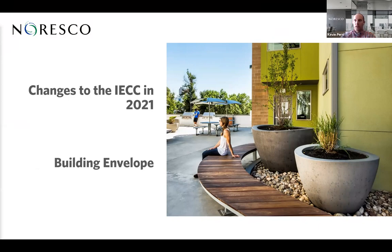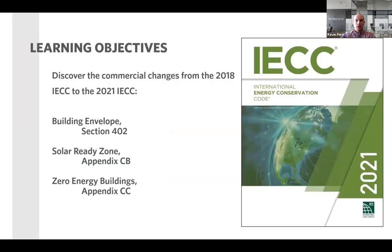We're going to be covering the changes in the International Energy Conservation Code in 2021 from the 2018 version. The learning objectives are mostly geared towards architects. We'll cover the building envelope section 402, the solar ready zone appendix CB, and the zero energy buildings appendix CC. Those two appendices will be a brief overview of what has changed.